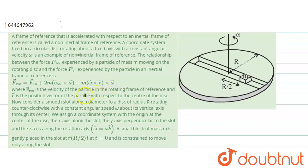These extra terms correspond to the tangential and centripetal acceleration components. V_rotational is the velocity of the particle in the rotational frame of reference — applicable when the particle is sliding with respect to the axis. R is the position vector of the particle with respect to the center of the disc.